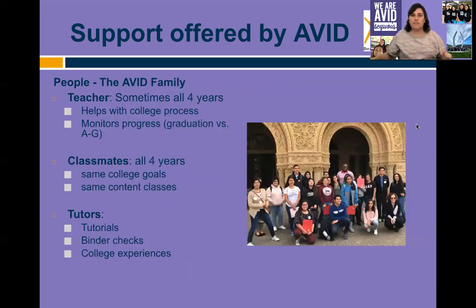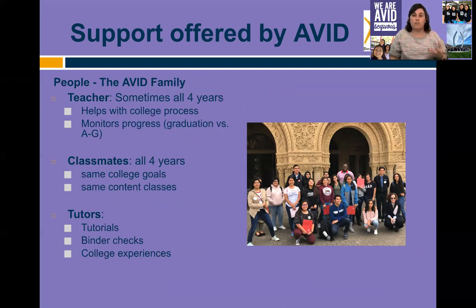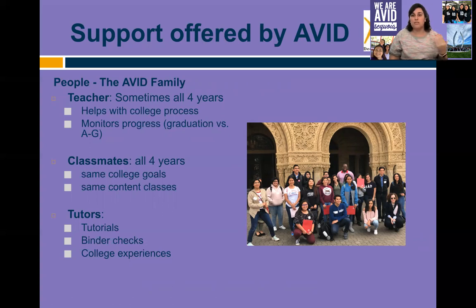We think of AVID as a family. We try to have the same teacher for all four years — someone who helps with the college process, monitors progress, graduation, and A-to-G requirements for college admissions. We also look to have the same classmates for all four years, so students are around a like-minded group with the same goals. We also work with tutors, whether they're other students at Sequoia or college students sharing about their college experiences, doing binder checks, and helping with tutorials.